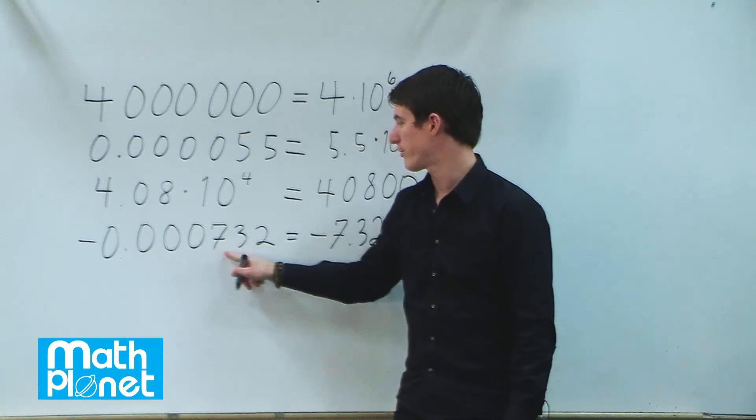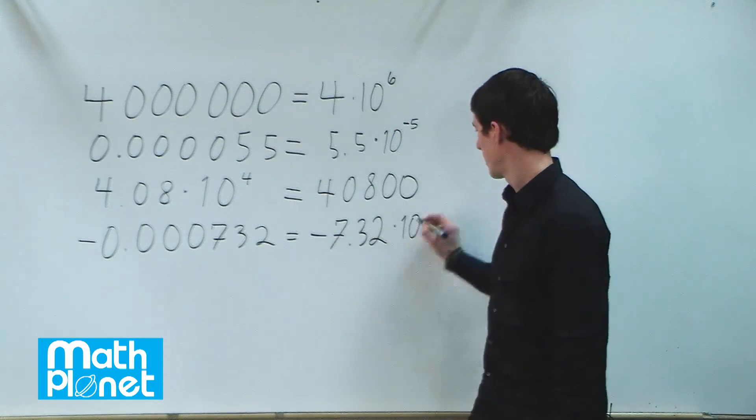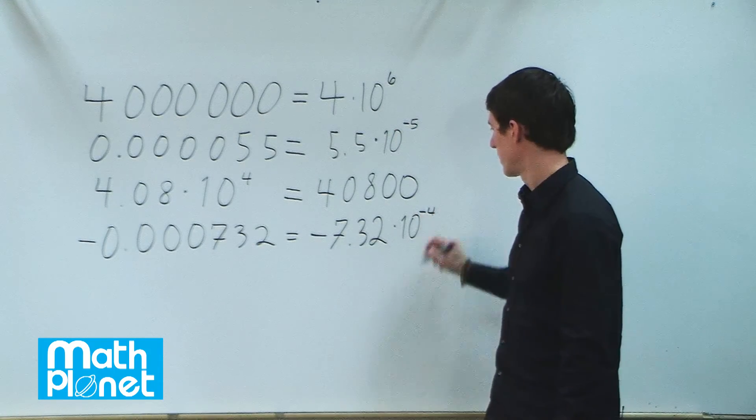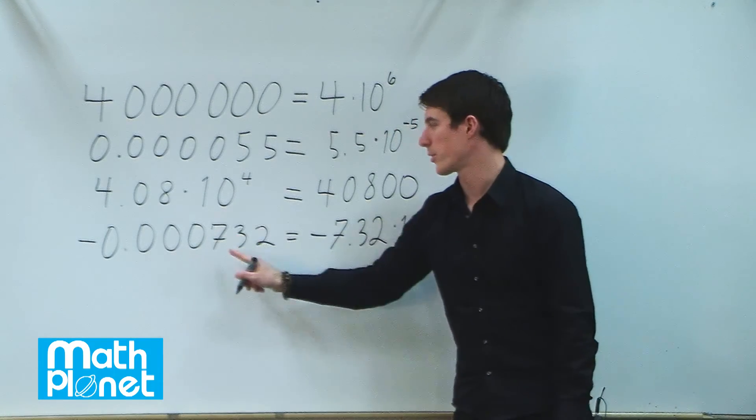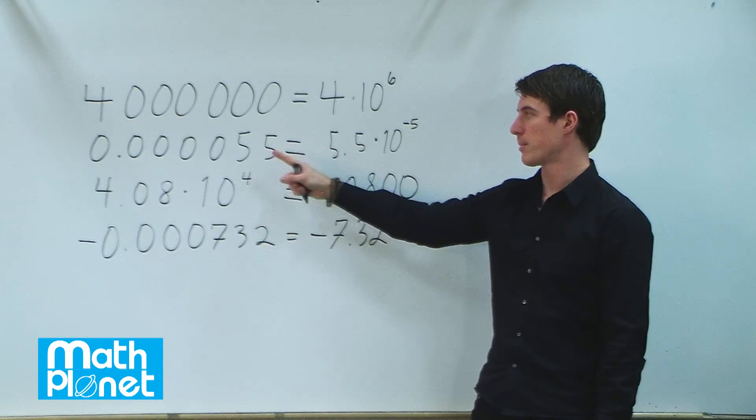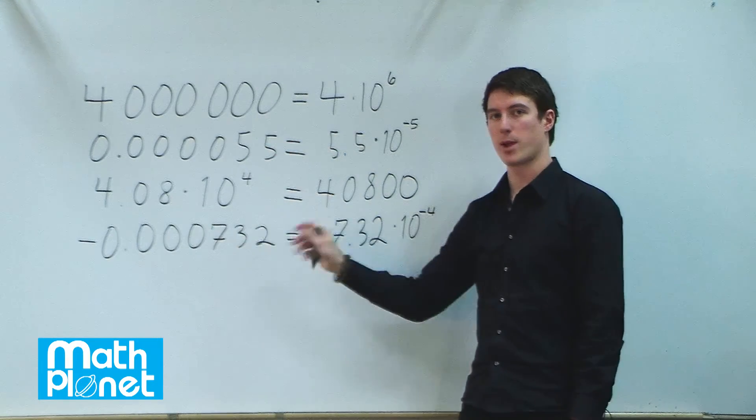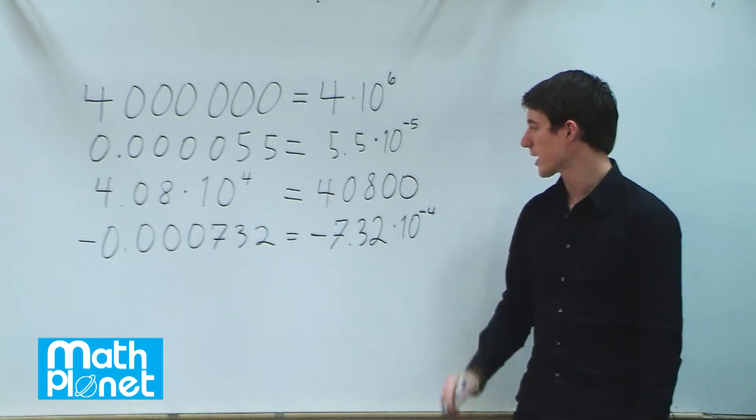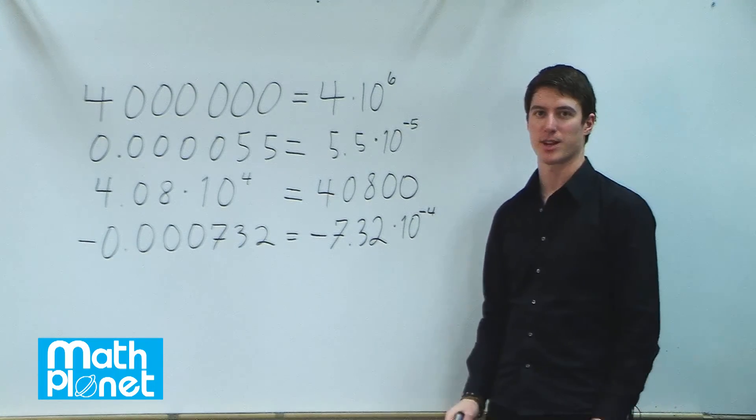So negative 4. It's negative because we moved to the right. This negative has nothing to do with the sign of the number. It's that we're moving to the right with the decimal place. So this is negative 7.32 times 10 to the negative 4.